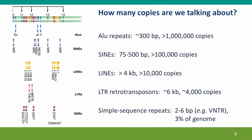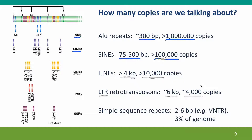How many copies are we talking about? A lot. ALU repeats are about 300 base pairs long and there are more than a million of them in our genomes. Short interspersed nuclear elements (SINEs) — some shorter than ALU repeats, some longer — number more than 100,000 copies. LINE elements, or long interspersed nuclear repeats, are bigger than 4,000 base pairs and there are more than 10,000 of them. LTR retrotransposons — which we'll discuss in the next lecture — are about 6 kb long with about 4,000 copies. And simple sequence repeats, like VNTR loci, make up about 3% of our genome.